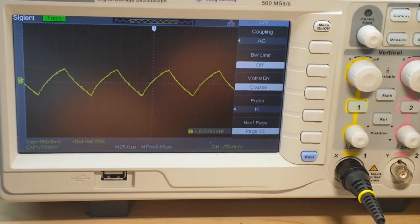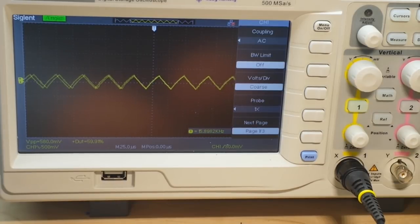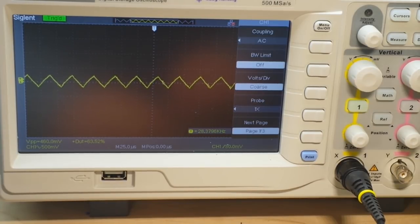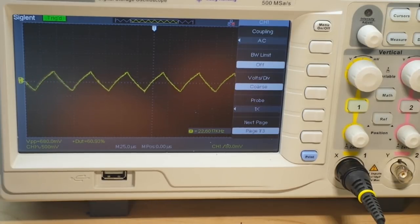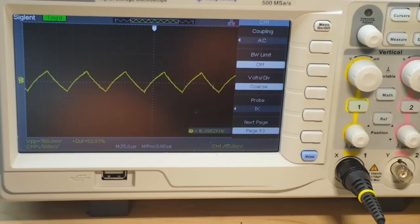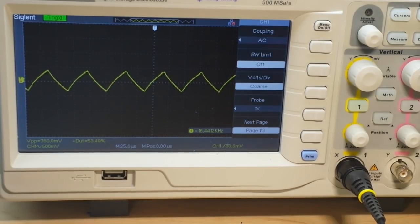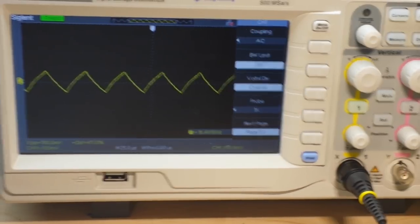And there you have it. We now have a triangle wave which we can adjust. And you'll see that the duty cycle remains relatively stable. And that's our part two of how to build your own function generator.